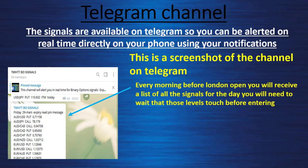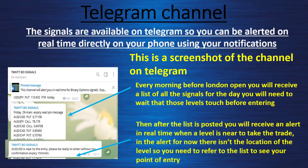Every morning before London open you will receive a list of all the signals for the day. You will need to wait for those levels to be touched before entering. Then you will receive an alert in real time when the level is near, to take the trade. In the alert for now, there isn't the location of the level or the entry price, so you need to refer to the list that I posted in the morning to see your point of entry.